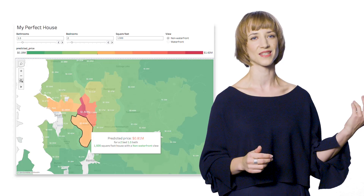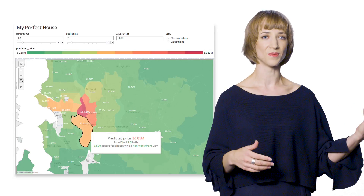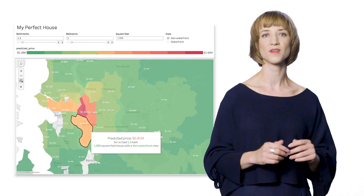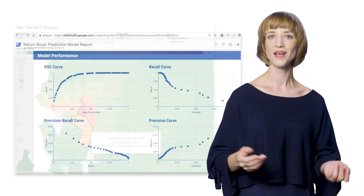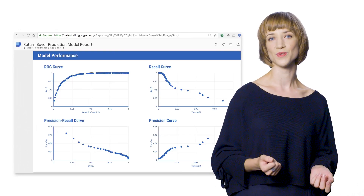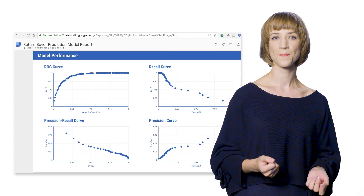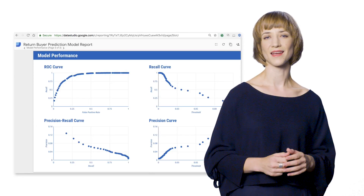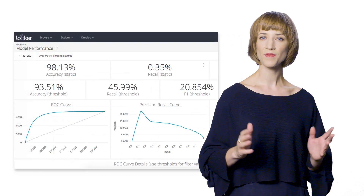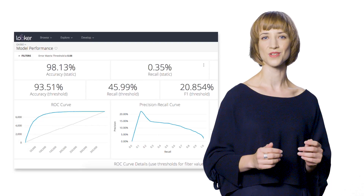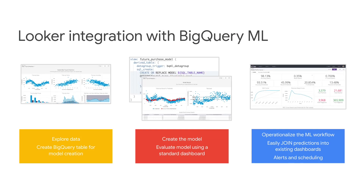Here's what housing prediction looks like. And as an added bonus, you get those model evaluation functions you know and love, including the ROC curve. What you're looking at here is the Data Studio version. But we've got Looker integration too, making it easy to explore data, create models, and operationalize your ML workflow with Looker.